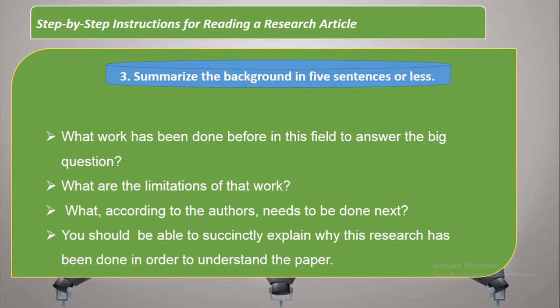The second thing is: what are the limitations of that work? What were the limitations of works already conducted in the literature, and what, according to the author, needs to be done? This is basically the gap — on the basis of that gap the author has written the current paper. You should be able to succinctly explain why this research has been done. When you find the gap, understand what work has been done, what the limitations of those works were, and what the author is going to do next.